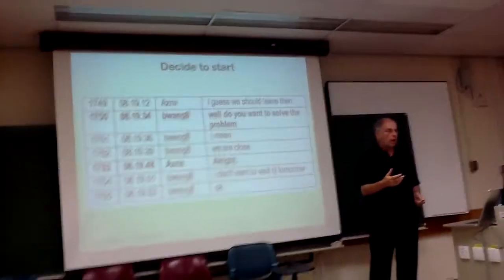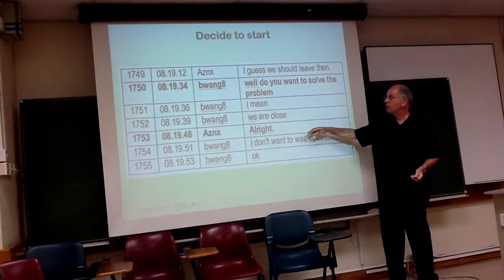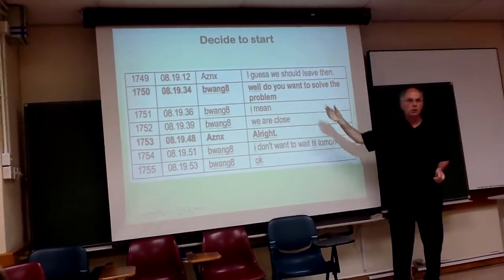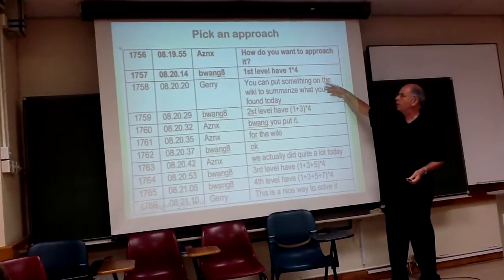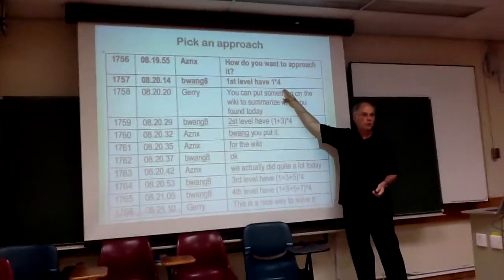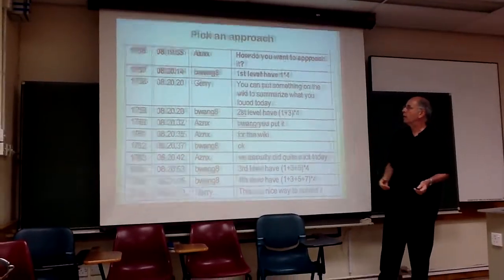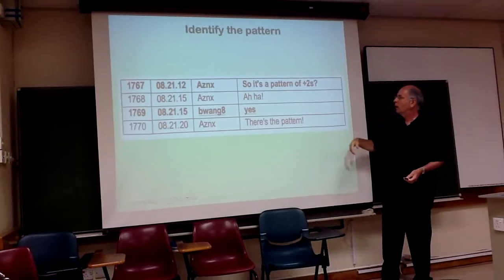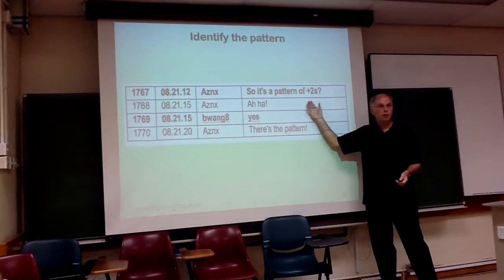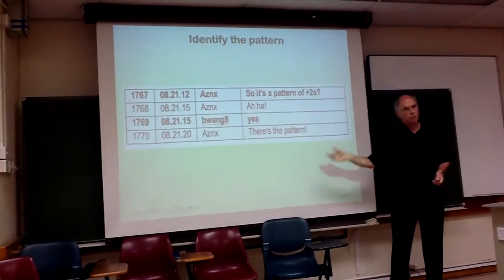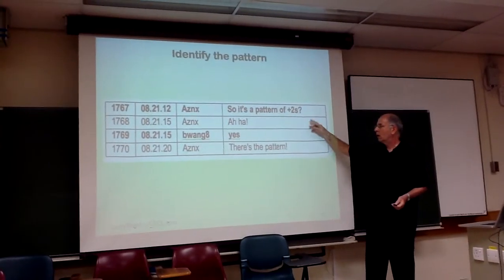One person proposes they should work on this and another one accepts it. The next step is they decide to start — one person says 'do you want to solve this problem?' and the other agrees, a question-and-response adjacency pair representing a decision to start. Here they pick an approach: the four-fold symmetry, adding up and multiplying by four. Then they start to identify the pattern in a narrative way, which is based on a graphical view, and then they'll translate that into an algebraic view.